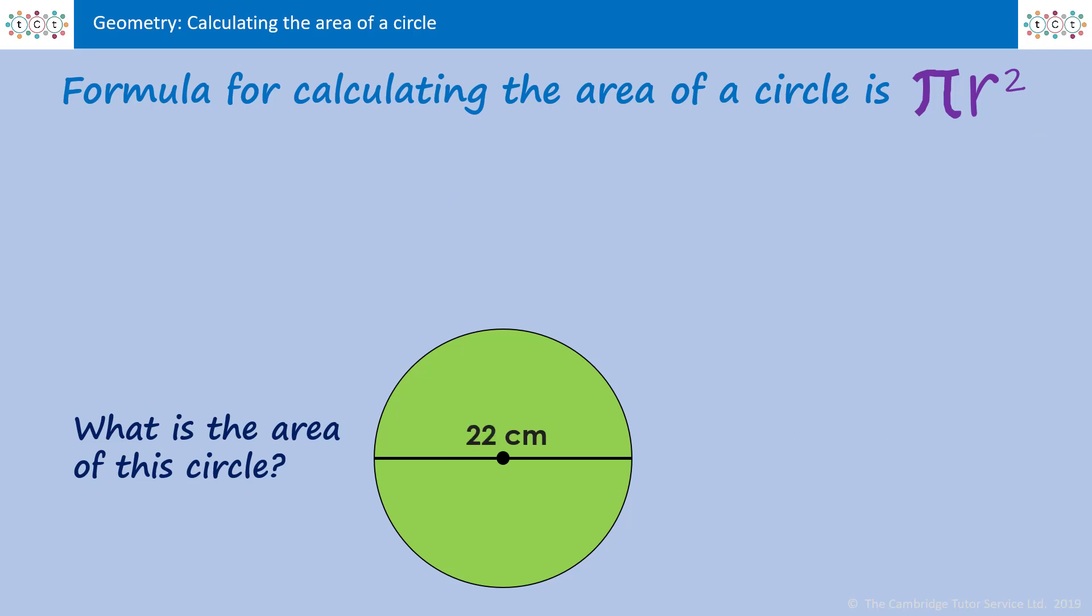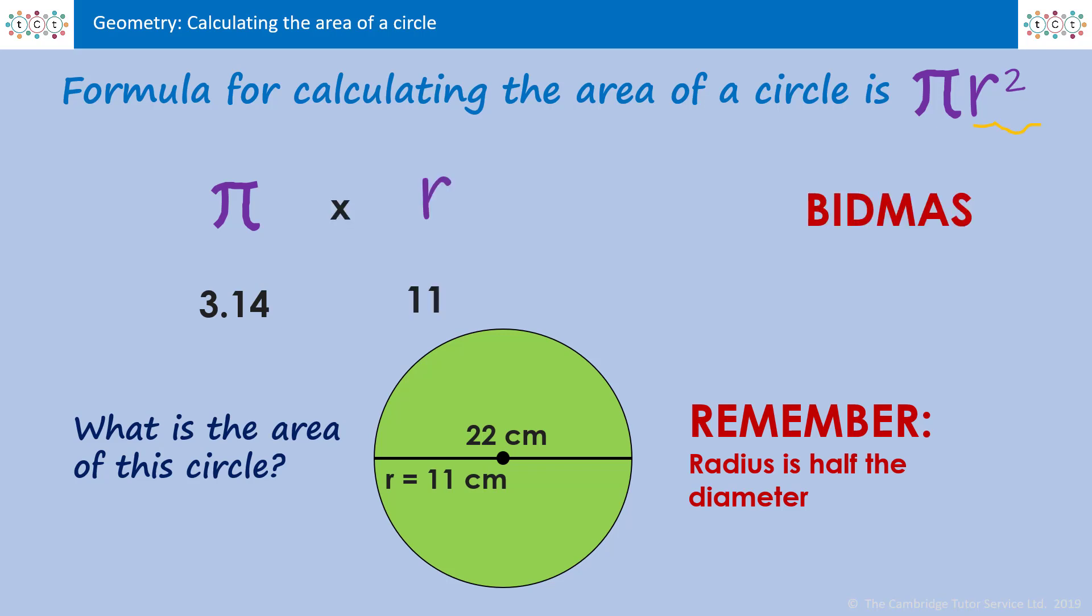This time it's a bit different. We have to add in one extra step because you'll notice that we have the diameter of the circle and not the radius. As long as you remember that the radius is half the diameter, this won't cause a problem. Half of 22 is 11, so the radius we're working with here is 11 centimeters. And we carry on as before: pi which is 3.14, remembering BIDMAS and squaring the radius first. 11 squared is 121, so it's 3.14 times by 121 to give us the area of the circle, and that's 379.94 centimeters squared.